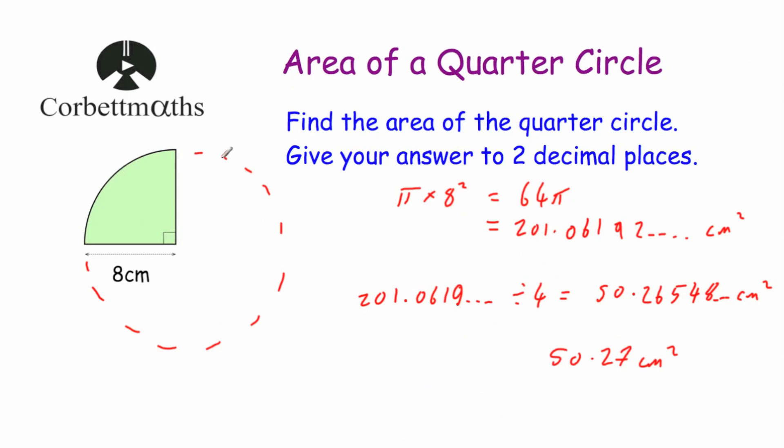To find the area of a quarter circle, you just find the area of the whole circle and divide it by four. I really hope you found this video useful — thanks very much.